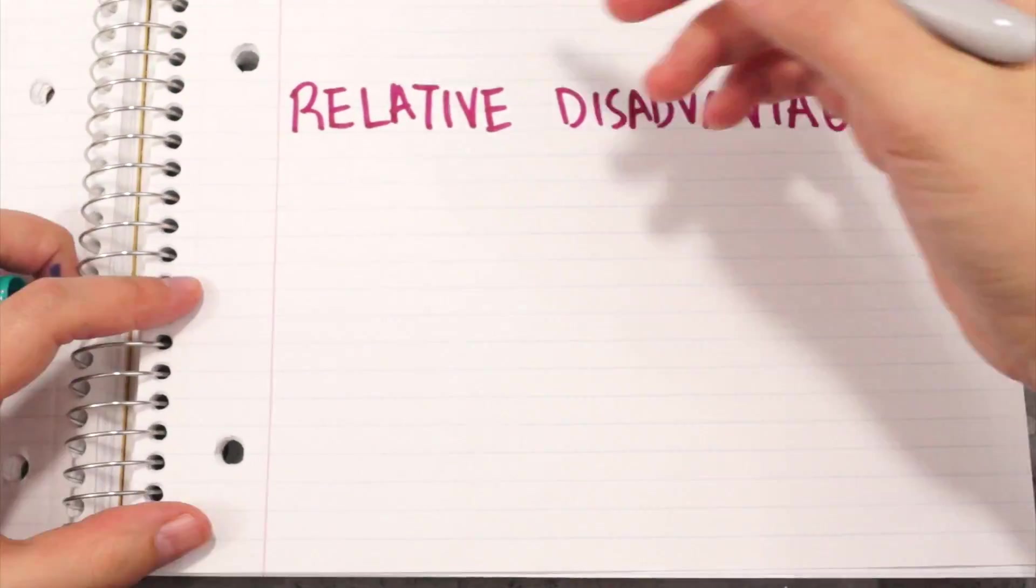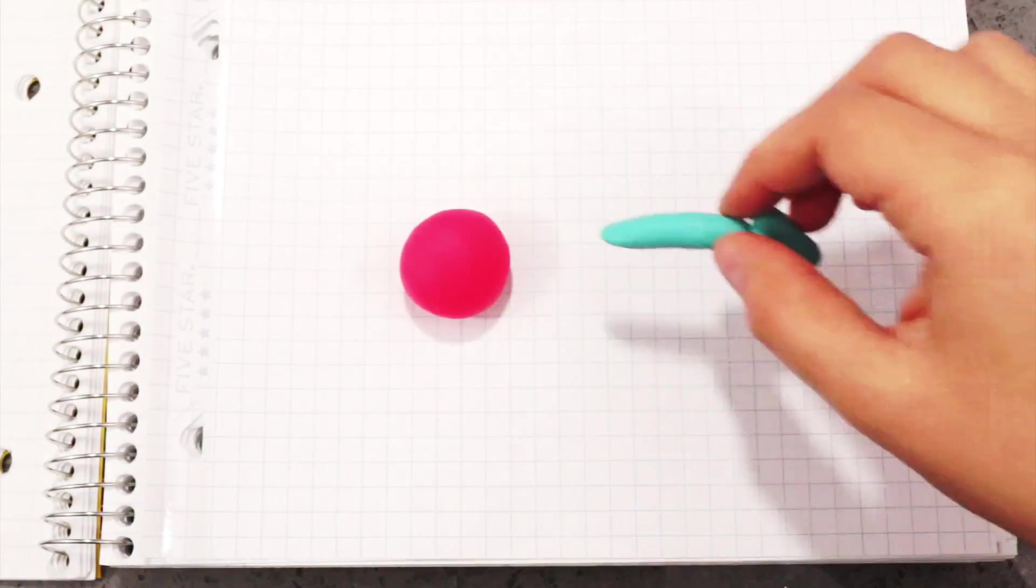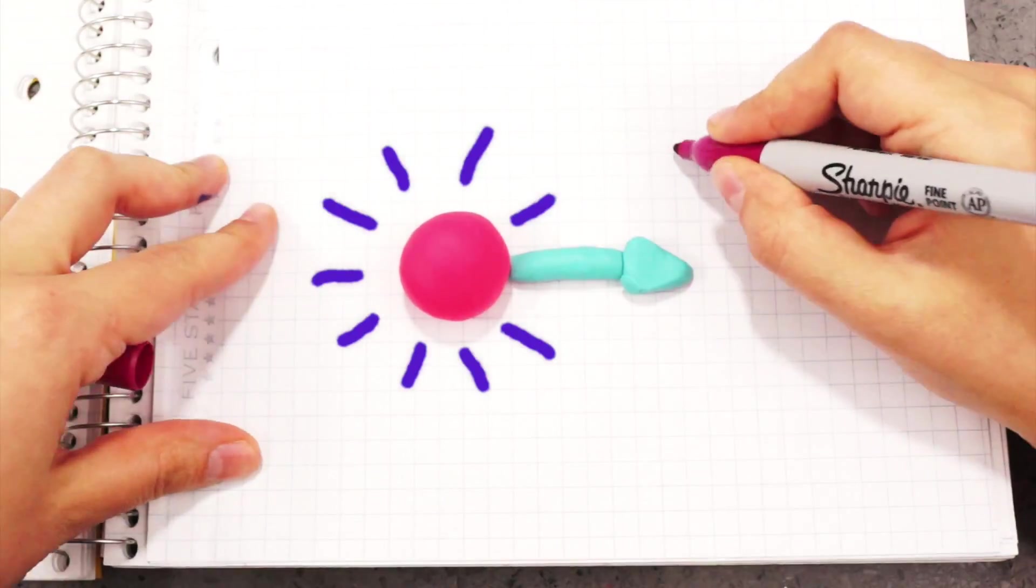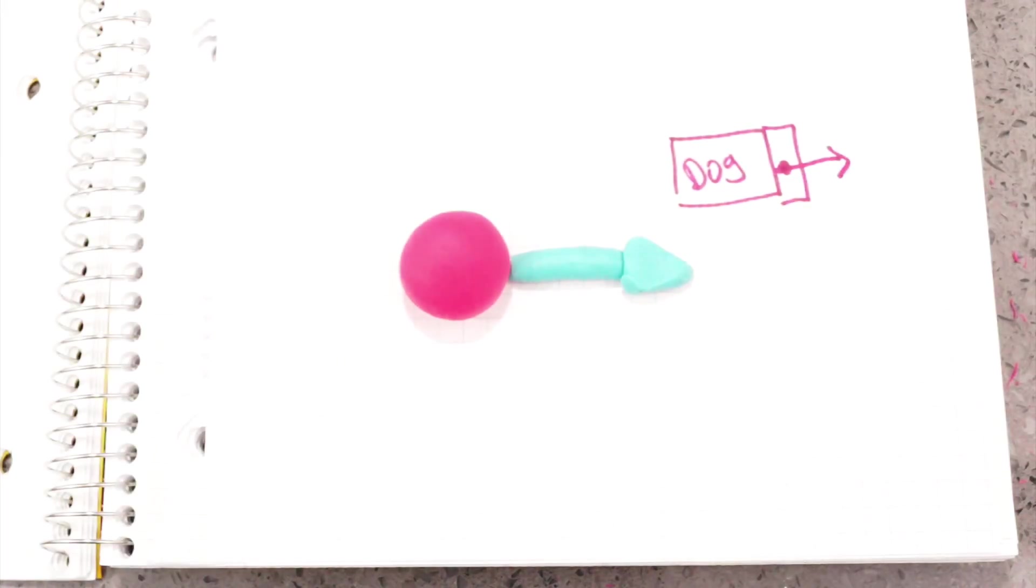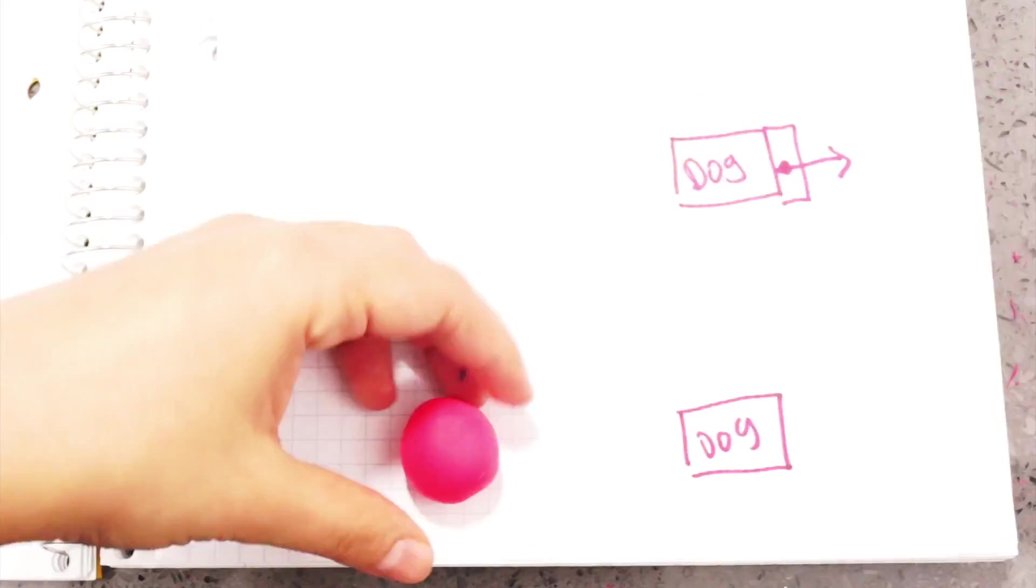Relative disadvantages. Linked lists require extra space for storing pointers per node. Since the nodes are scattered around memory, you have to store a pointer per node to keep track of the list. With arrays, you only store data per item because you already know where the next item is.